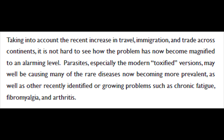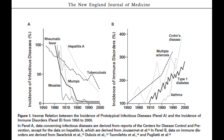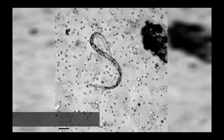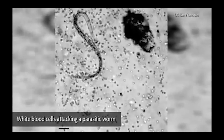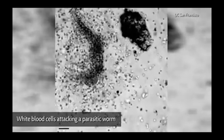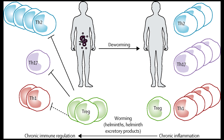Parasites, especially the modern toxified versions — whatever that means — may well be causing many of the rare diseases now becoming more prevalent, as well as other recently identified or growing problems such as chronic fatigue, fibromyalgia, and arthritis. I guess these people have never heard of the hygiene or old friends hypothesis. We know that as infectious disease has gone down, autoimmune diseases have gone up. Parasitic worms, or helminths in particular, excrete substances that modulate the immune system. The old friends hypothesis proposes that humans have adapted to the presence of such pathogens, and as fewer people become infected with them, the body doesn't know how to adapt to their absence, and the immune system can overreact, causing autoimmune disease.